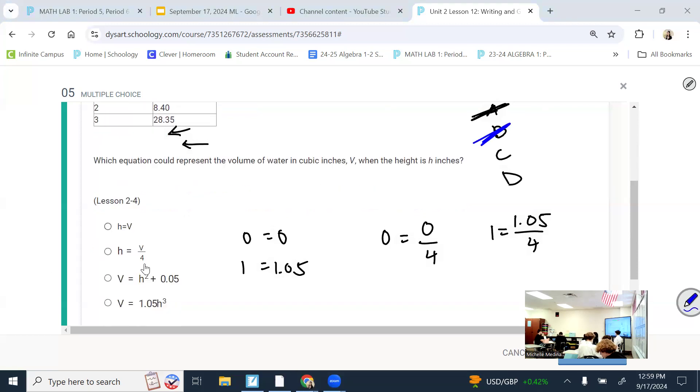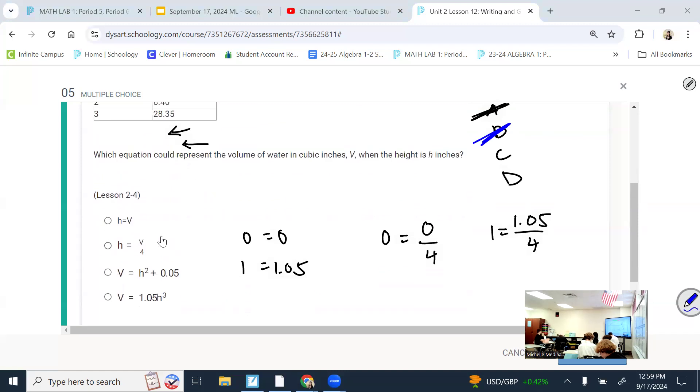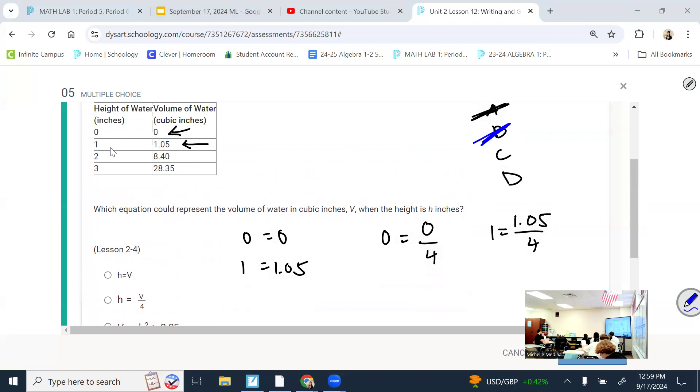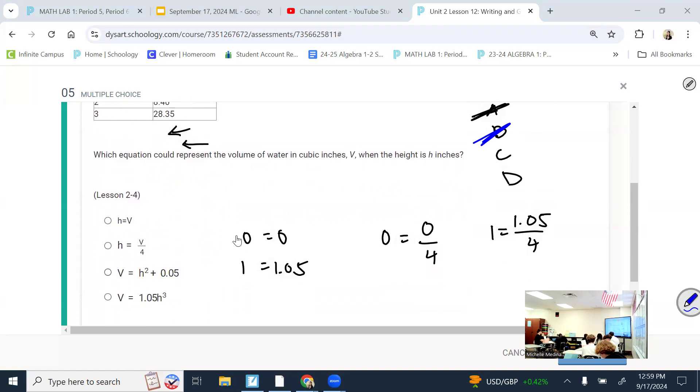For the third one, it looks like we have h squared plus 0.05. I'm going to skip the zero zero just because there's lots of intricacies with that one. I'm just going to go straight into the second one. So if I plug in 1 for the h and I plug in 1.05 for the volume, let's see if we get something that's true. What's 1 squared? What's 1 plus 1.05? 1 plus 1.05, which is not equal to 1.05, right? So by process of elimination, it would probably have to be this one.